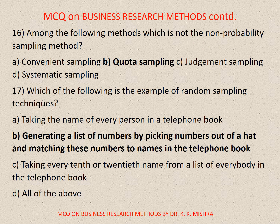Question number 16. Among the following methods, which is not the non-probability sampling method? Options are: A. Convenient sampling, B. Quota sampling, C. Judgment sampling, D. Systematic sampling. Correct option is D. Systematic sampling. Question number 17. Which of the following is an example of random sampling techniques? Correct option is B: Generating a list of numbers by picking numbers out of a hat and matching these numbers to names in the telephone book.